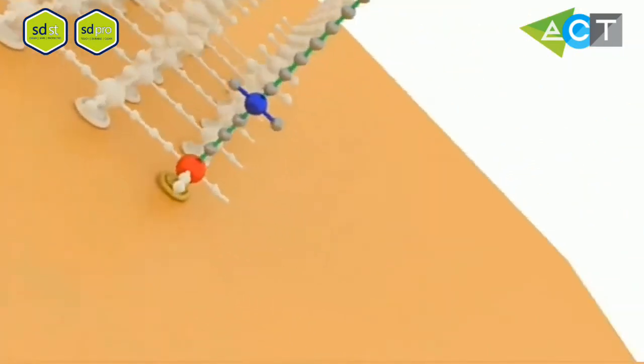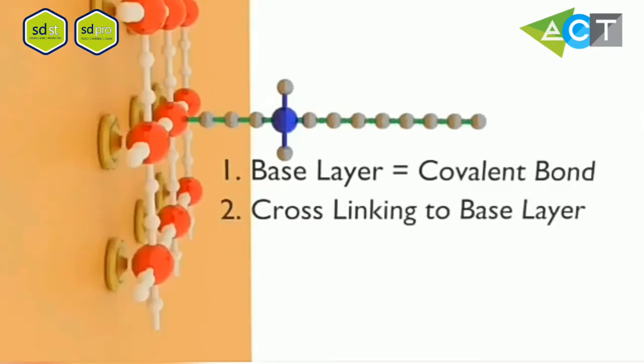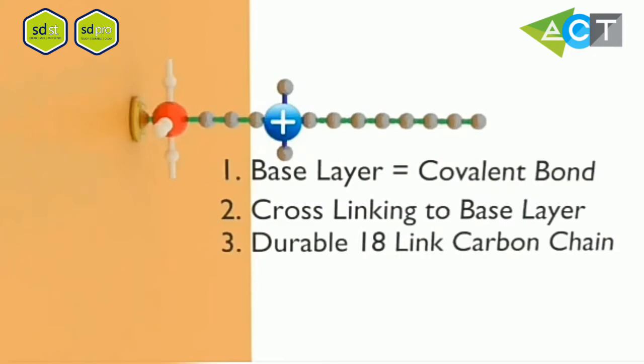The active molecule has three functional elements. First, the base creates a strong covalent bond with the surface. Second, it cross-links to the base layer and adjacent molecules. And lastly, the 18-link carbon chain with a positive nitrogen atom at its base.